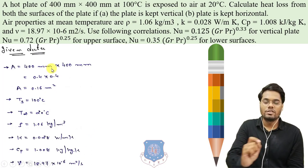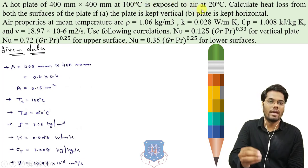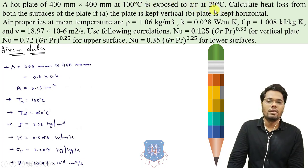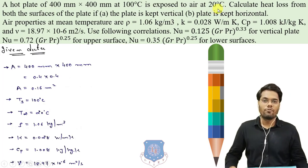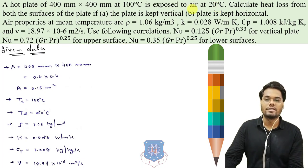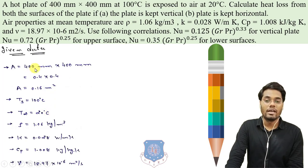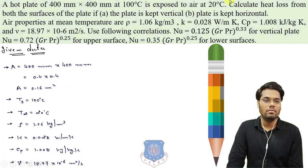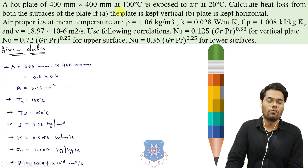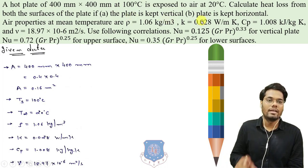Let us solve the first numerical of free convection. A hot plate of 400 mm × 400 mm at 100°C is exposed to air at 20°C. The surface temperature Ts is 100°C and T-infinity is 20°C; the area is 0.16 m². Calculate the heat loss from both surfaces: first when the plate is kept vertical, second when the plate is kept horizontal.